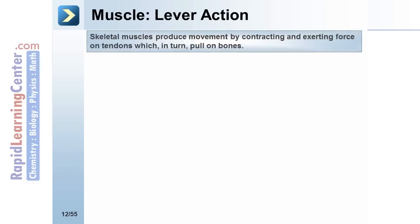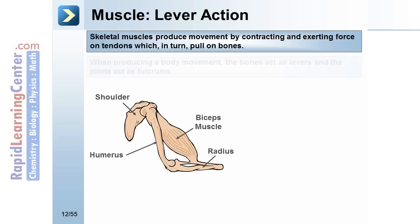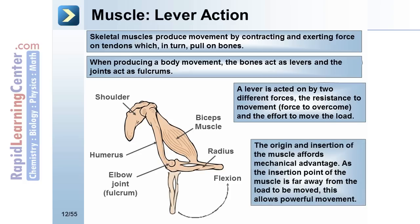Skeletal muscles produce movement by contracting and exerting force on tendons, which in turn pull on the bones. When producing a body movement, the bones act as levers and the joints act as fulcrums. A lever is acted on by two different forces: the resistance to movement, which is the force to overcome, and the effort to move the load. The origin and insertion of the muscle affords mechanical advantage. As the insertion point of the muscle is far from the load to be moved, this allows powerful movement.